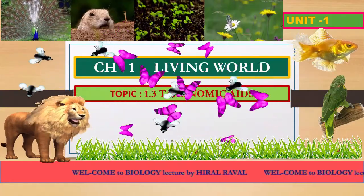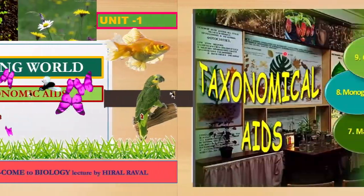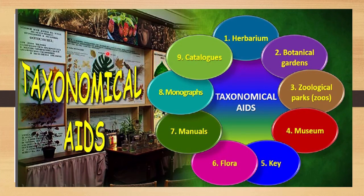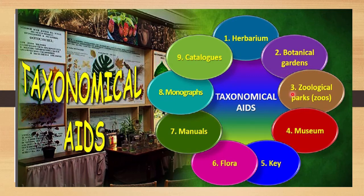Hello students, today we are going to discuss about taxonomic aids — how we can use taxonomy as a tool. In each area we can apply taxonomy as a tool. We will discuss each tool in detail: herbarium, botanical gardens, zoological parks, museum, key, flora, manuals, monograph, and catalogs.